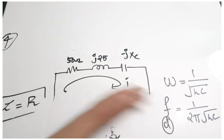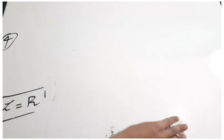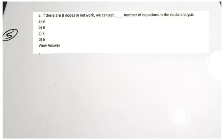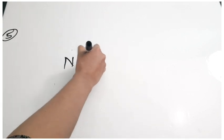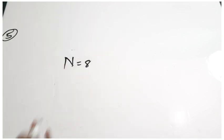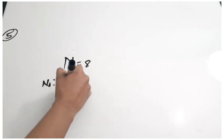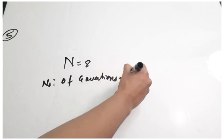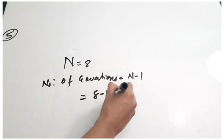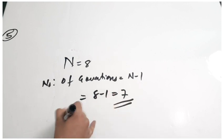Fifth question is not from resonance. If there are 8 nodes in a network, we can get dash number of equations in the nodal analysis. If a network has n nodes, then you can have n minus 1 number of equations. So if n equals 8, number of equations equals 8 minus 1, which is 7. Correct answer is option C.